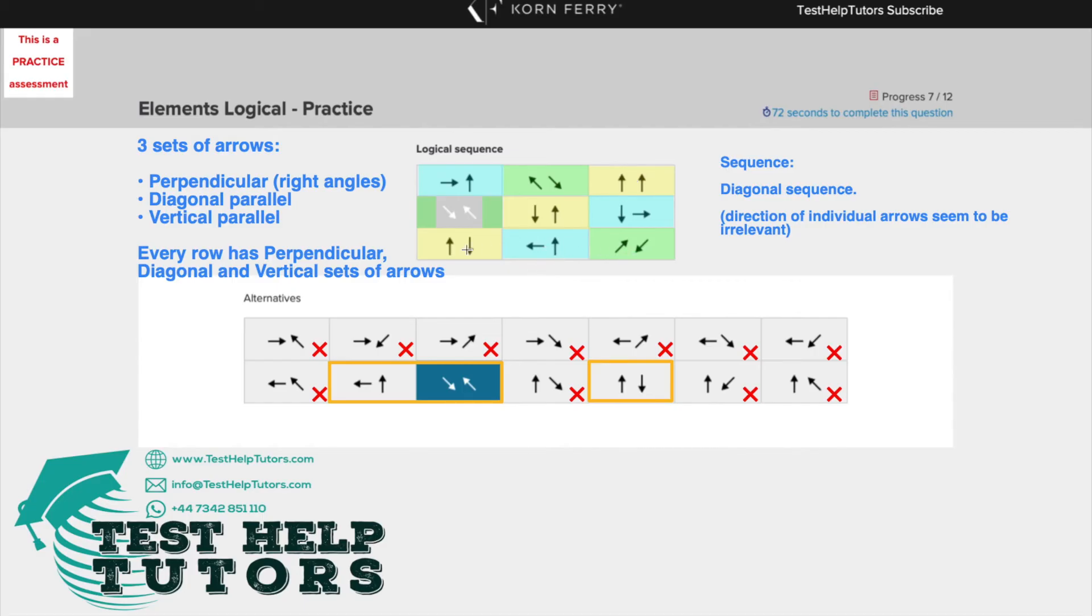Perpendicular, diagonal, vertical. We've got perpendicular. We don't have diagonal yet, but we've got vertical. So we know our missing piece must be diagonal. So our answer has to be this one.